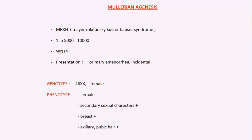Mullerian agenesis — the name itself tells you the definition: underdevelopment or non-development of Mullerian ducts. This condition is also called Meyer-Rokitansky-Küster-Hauser syndrome, and sometimes even called vaginal agenesis.